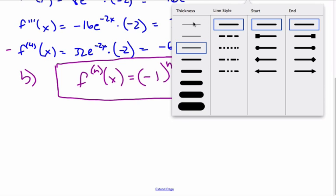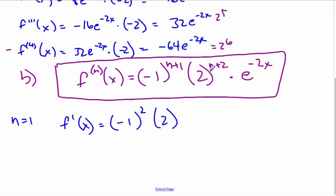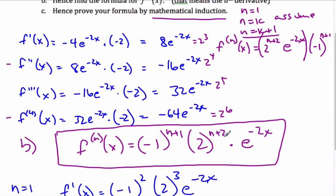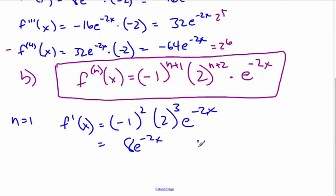Let's try the base case n equal to 1. I get negative 1 squared, times 2 to the 3, times e to the minus 2x, which is 1 times 8 times e to the negative 2x — and if I compare it to the first derivative I computed before, it is indeed true.